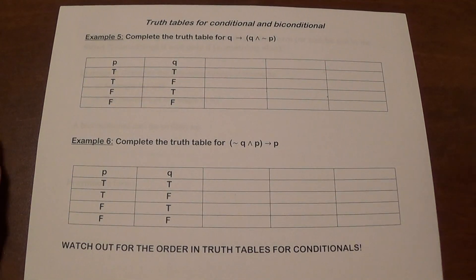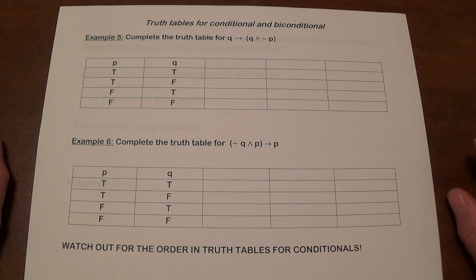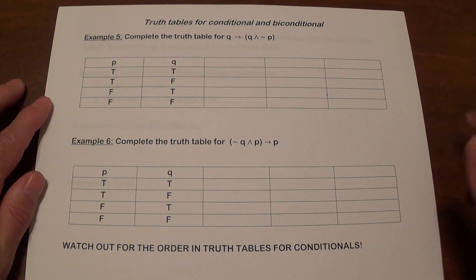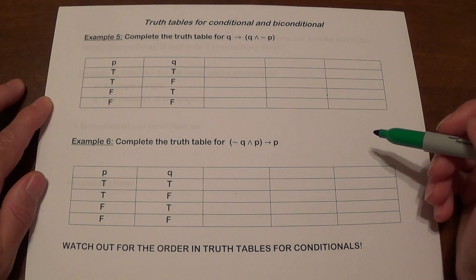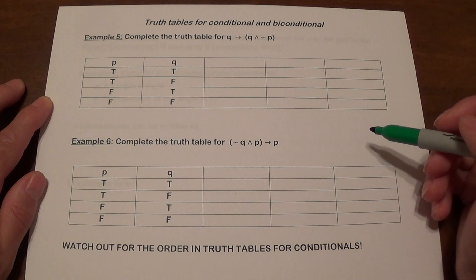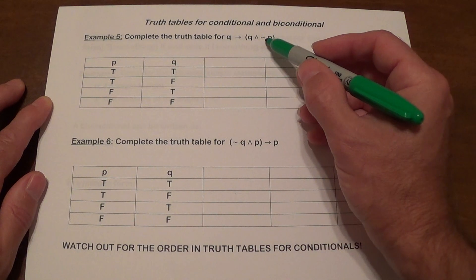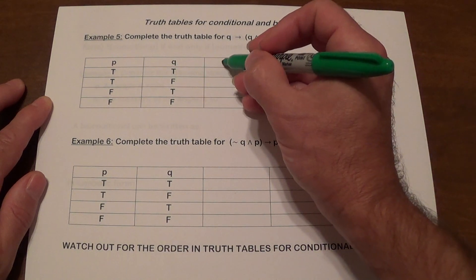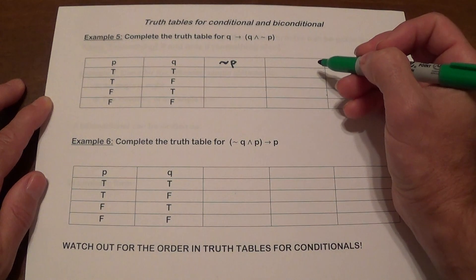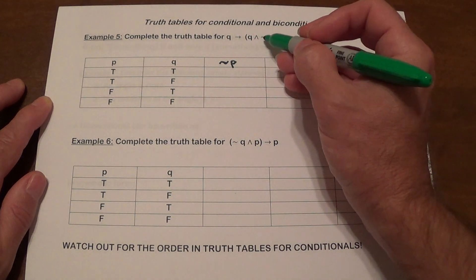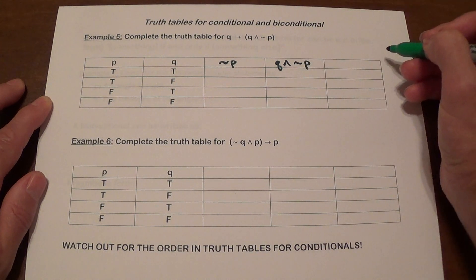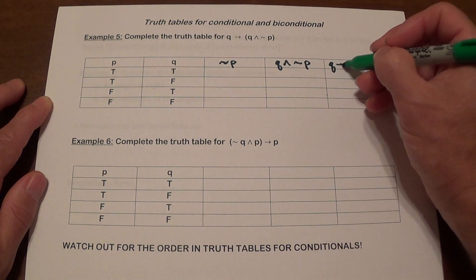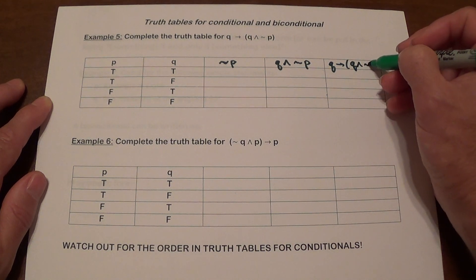Let's do the truth table for Q→(Q∧¬P). We need to build intermediate columns. We need ¬P, then Q∧¬P, and finally Q→(Q∧¬P). ¬P is false, false, true, true.